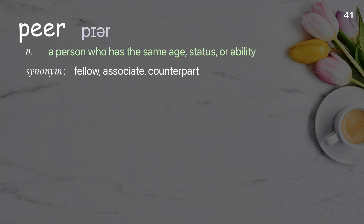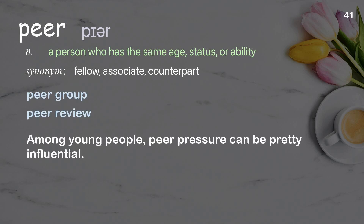Peer: a person who has the same age, status, or ability. Examples: peer group, peer review. Among young people, peer pressure can be pretty influential.